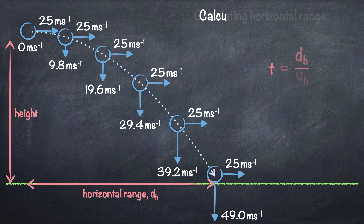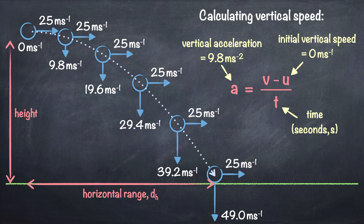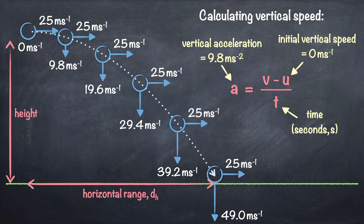Next up: calculating the projectile's vertical speed as it hits the ground. To do that, we use this equation. Remember that projectiles have a vertical acceleration and, on Earth, the acceleration due to gravity is 9.8 m/s². Another important thing to remember is that when projected horizontally, the initial vertical speed will be 0 m/s. t is the time taken for the projectile to fall from its starting position to the ground, and v is the projectile's vertical speed as it hits the ground.